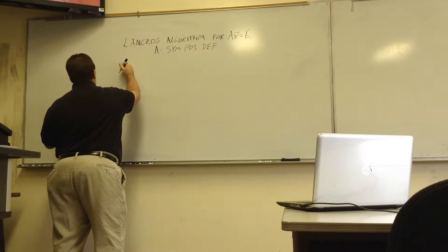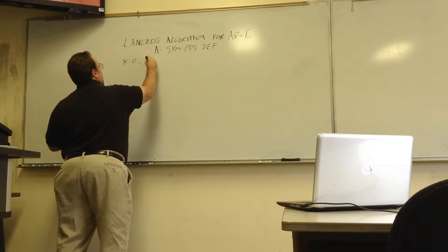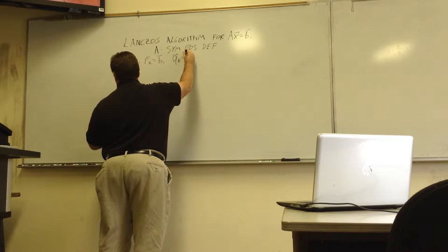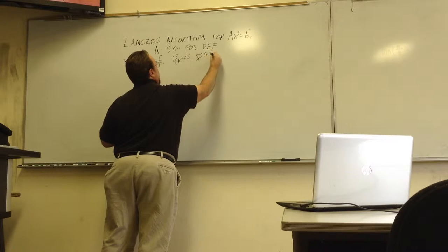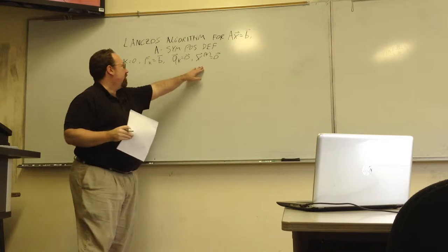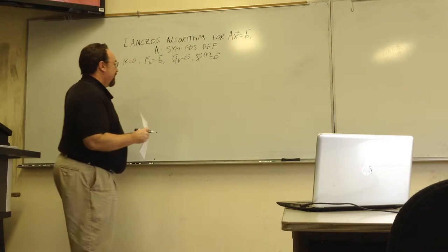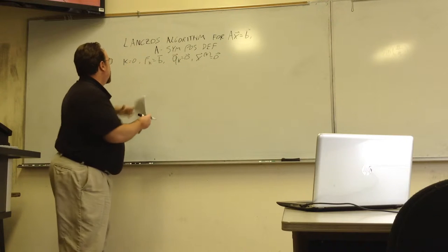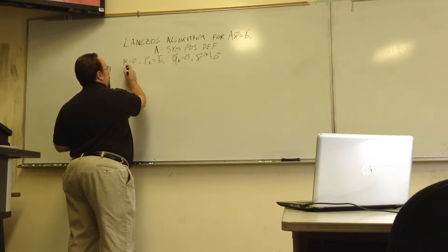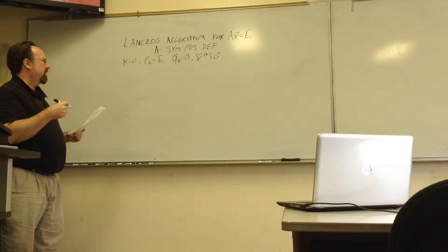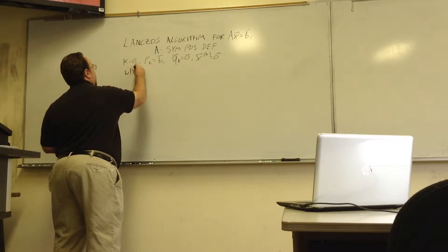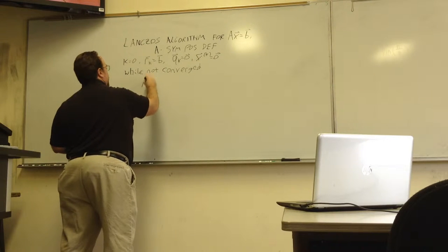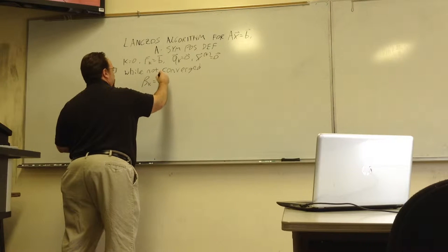We start out with our solution initially being zero. And we're going to generate a sequence of orthonormal vectors, these QKs. So we really started with Q1, but Q0 is zero. Keep in mind, we're going to have K here. At this point, K is equal to zero. Q1 will be the first actual vector in the sequence. As long as we are not converged, we have to generate our recursive coefficients, our betas.